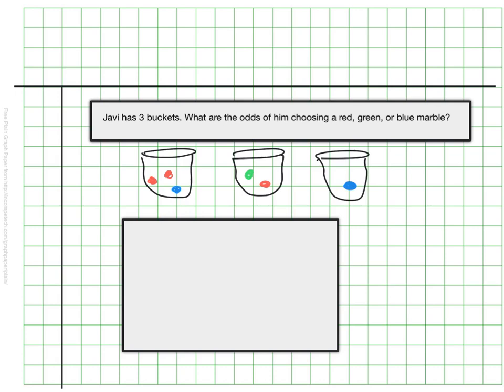The first choice that gets made, the first random decision, is that he's going to choose from either bucket one, two, or three. So I'm going to break this into bucket one, two, and three. That represents his first option that he has.